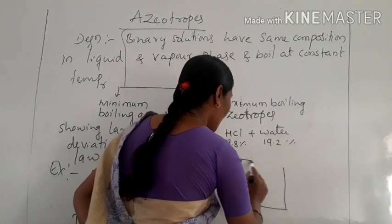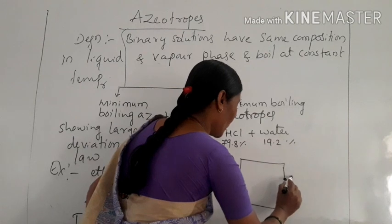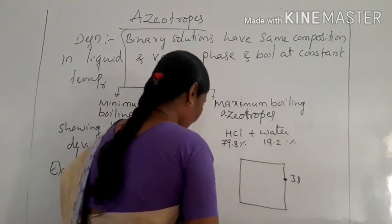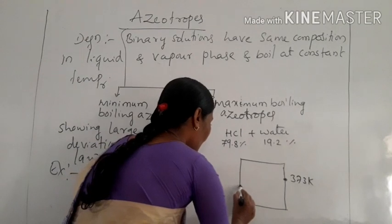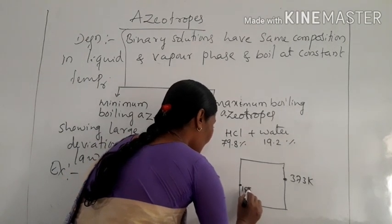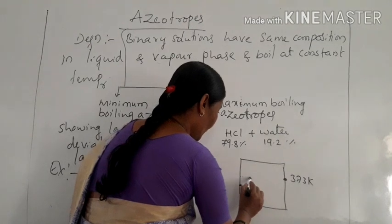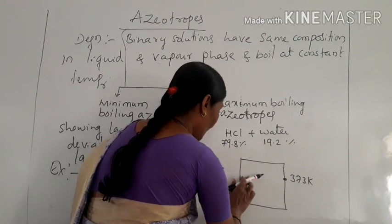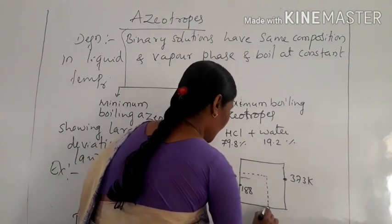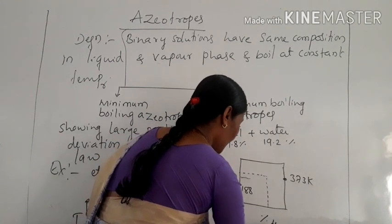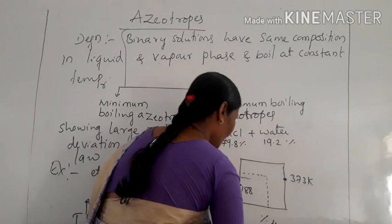This indicates maximum boiling azeotropes. The boiling point of water is 373 Kelvin and the boiling point of HCl is 188 Kelvin. On the graph, the x-axis shows percentage of water and the remaining percentage is HCl. This is the graph showing percentage of water versus temperature.